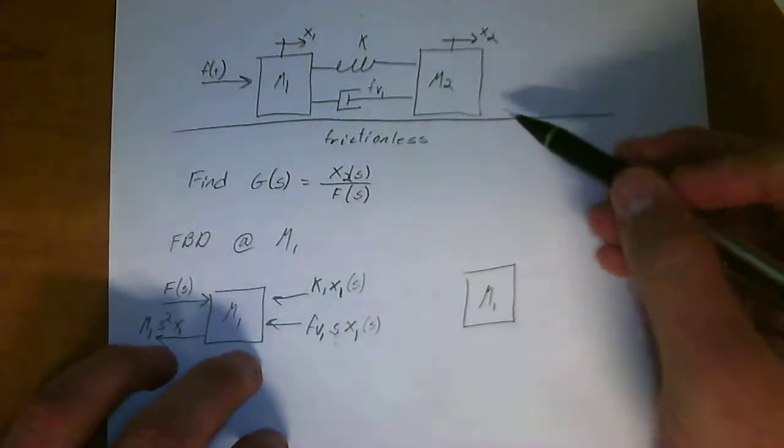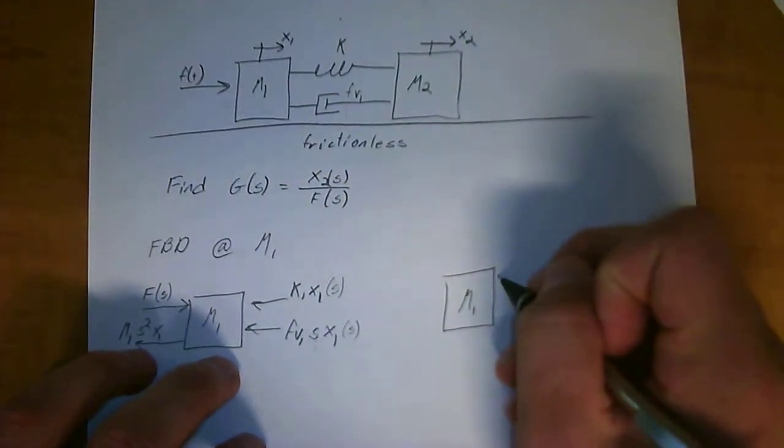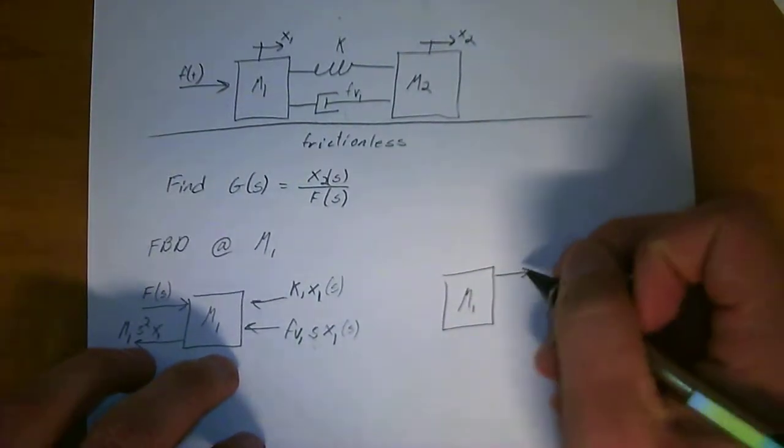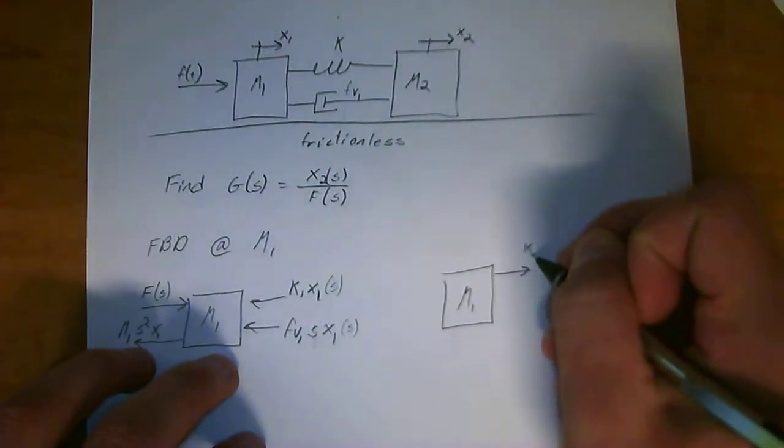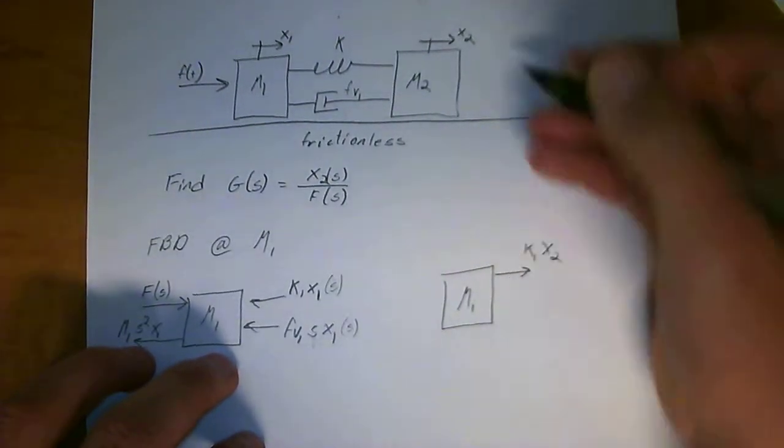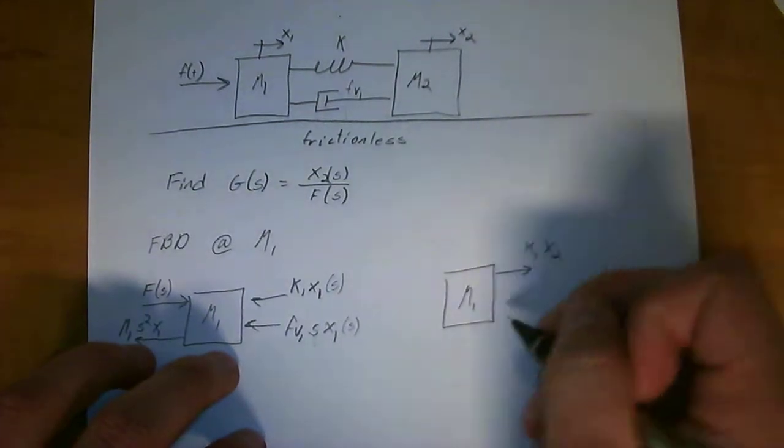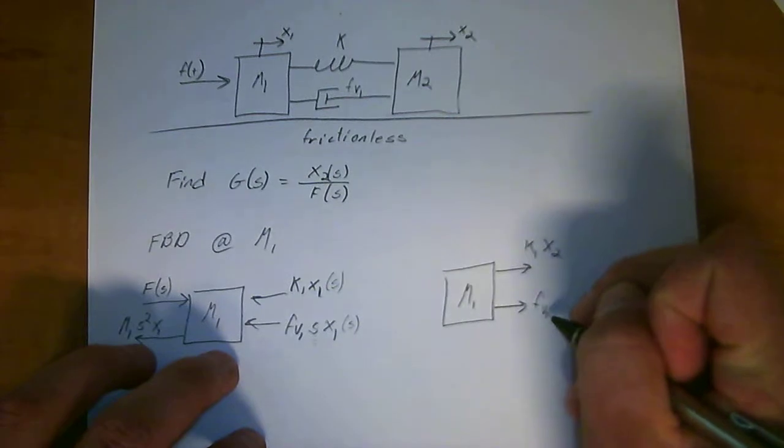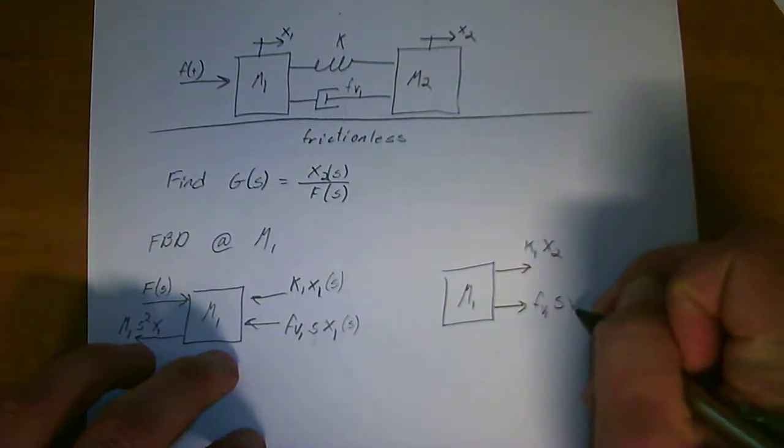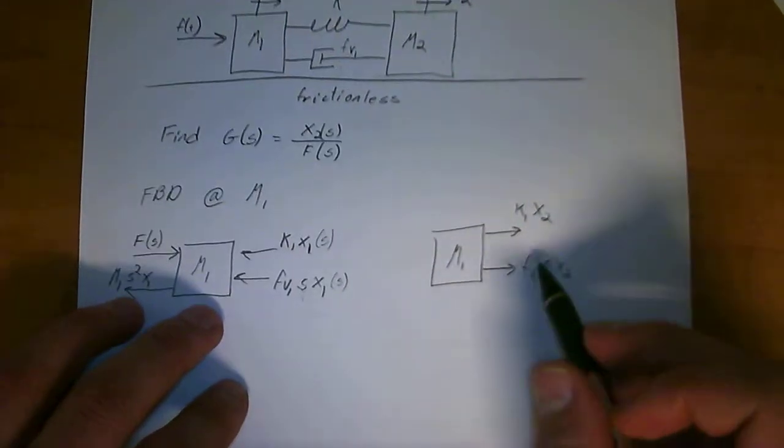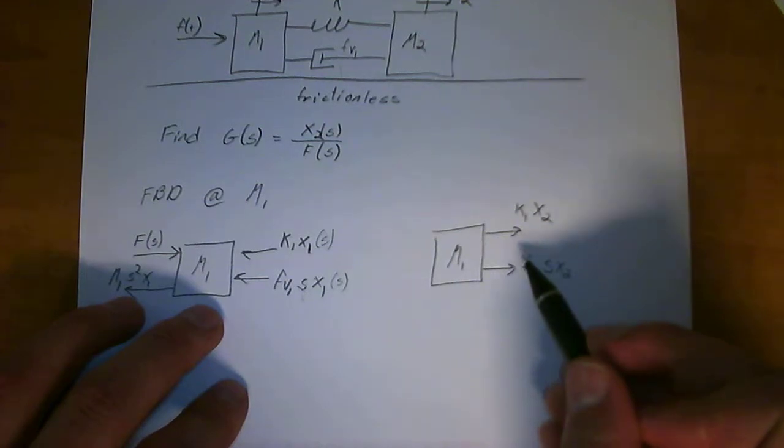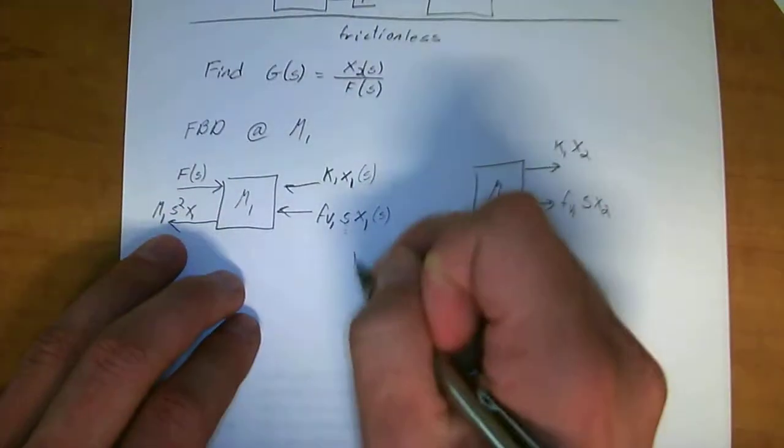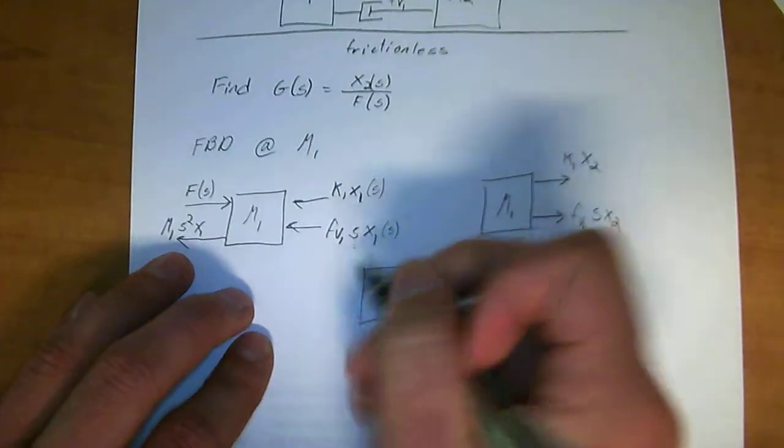Now you have to do the relation for m1 if it is kept still and m2 is moved. So if you move m2, then you've got the spring pulling on it. So k1 of x2, which is the motion of m2. And then you also have the damper which is going to pull on it, which is fv1 of s of x2. And that's what the effect of m2 moving has on m1.